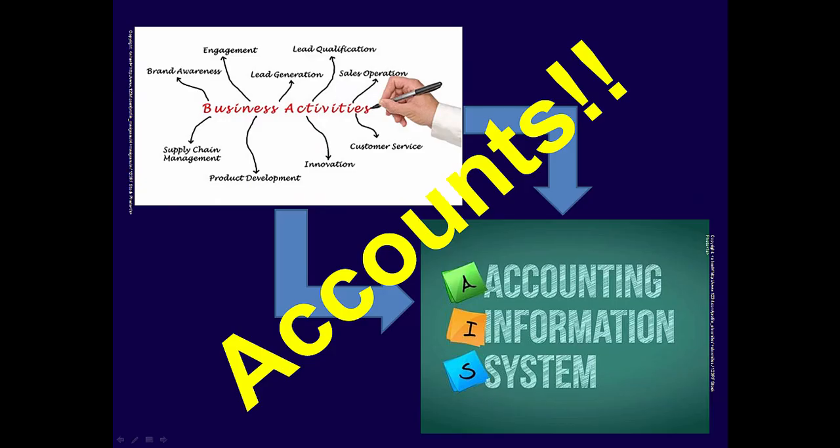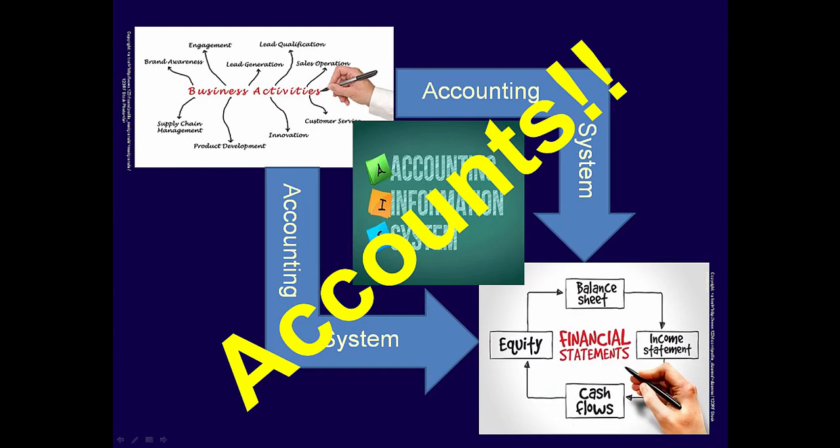In the last two videos, you were introduced to accounts — common subgroups of financial reporting elements that are used to accumulate or gather together business activities and make them more meaningful. With the addition of accounts, the accounting system can be used to produce financial statements that stakeholders need to better understand the business. Remember that financial statements tell the story of the business — its financial position and profitability — and are used by external stakeholders to make decisions about their interaction with the business.